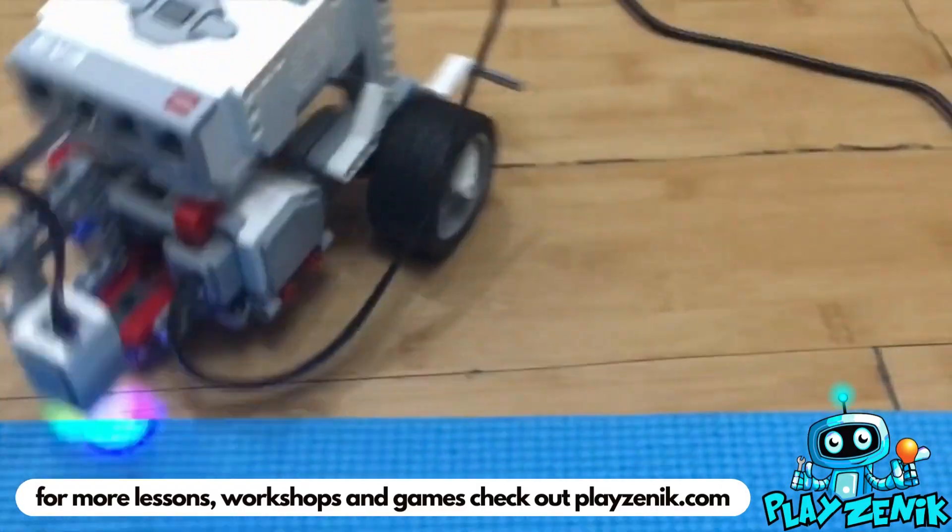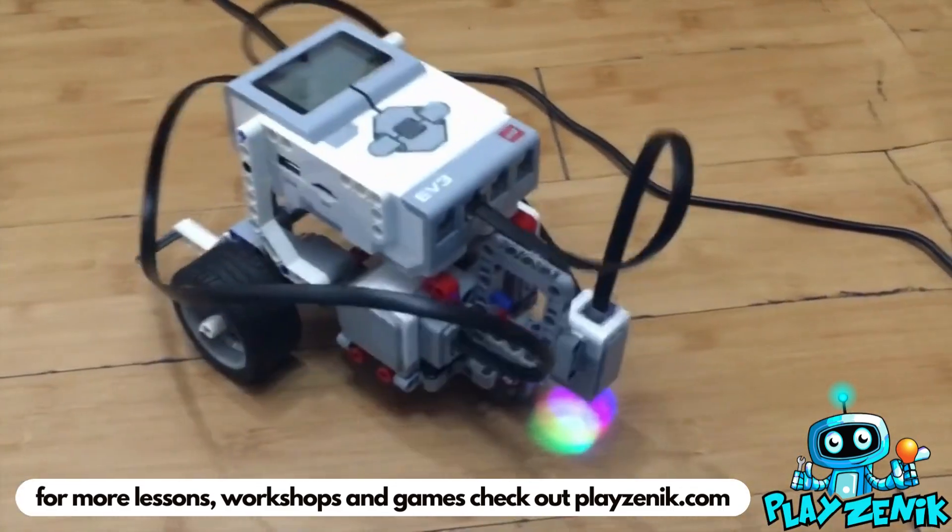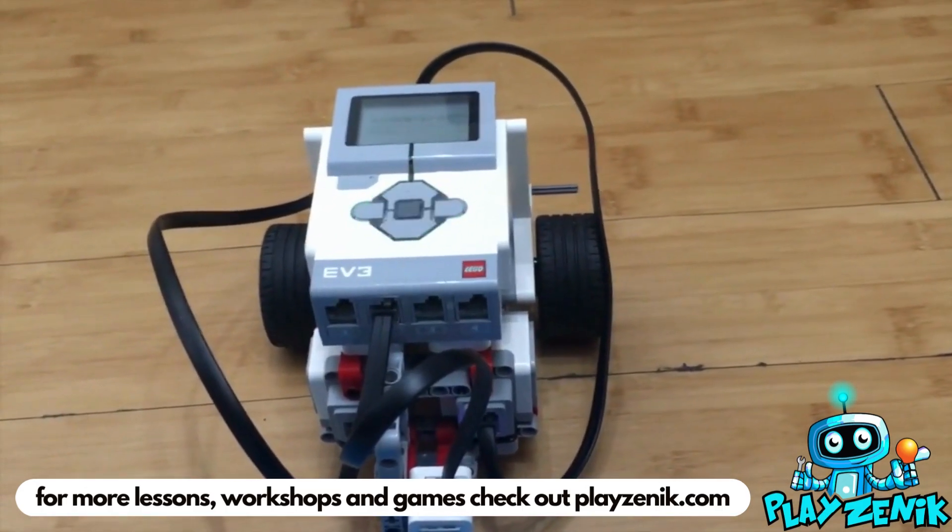So here is an example of our sensor in action. I have the program that when it sees blue it will turn around, so you can see it doing it twice there. Once the sensor is off of it, it does not move any longer.